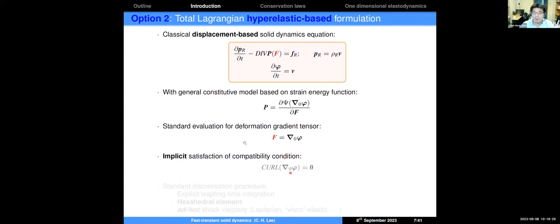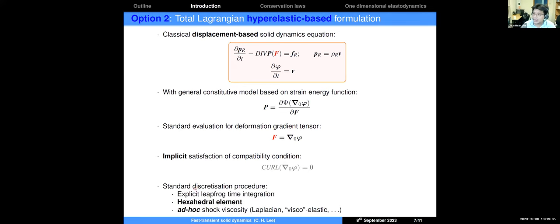For time integration, the standard leapfrog integrator is used. The software typically recommends hexahedral elements; if you use linear tetrahedral elements — preferred in industry — you encounter numerical artefacts such as volumetric locking, bending locking, and pressure instability. For contact or fracture problems involving shocks, you need to add ad hoc shock viscosity such as Laplacian viscosity or modify the model to include viscoelasticity and tune the parameters, but this affects the order of convergence of the algorithm.